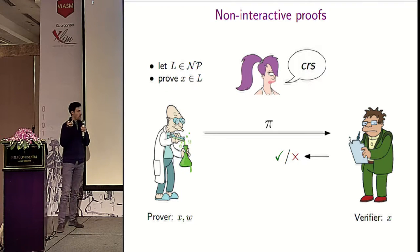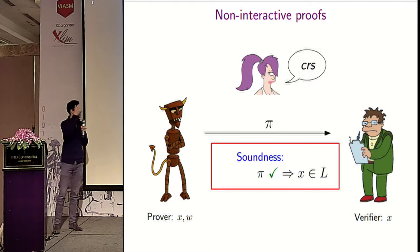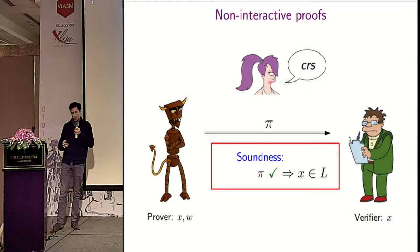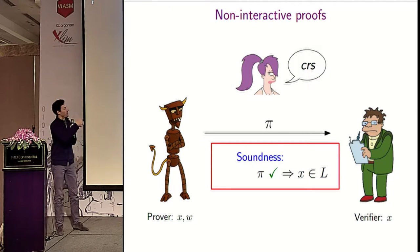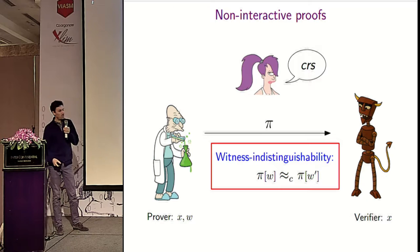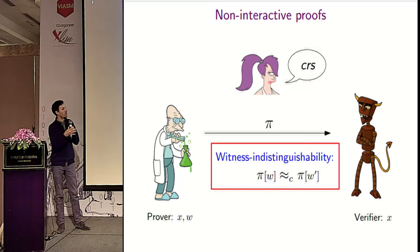The classical properties we want from a proof system include soundness, which means no adversary can convince the verifier of a wrong proof — if the proof is accepted, the statement should be in the language. There are also notions that protect the prover from malicious verifiers; in particular, we want to protect the witness. A weaker notion is witness indistinguishability, which asks that proofs computed using different witnesses should be indistinguishable.